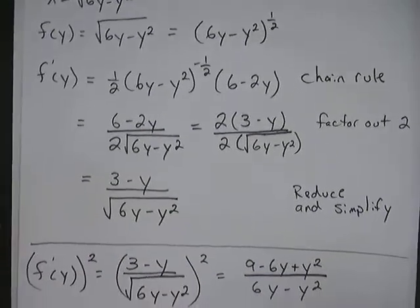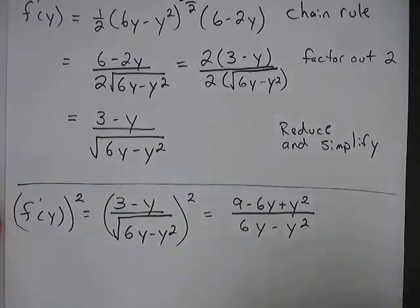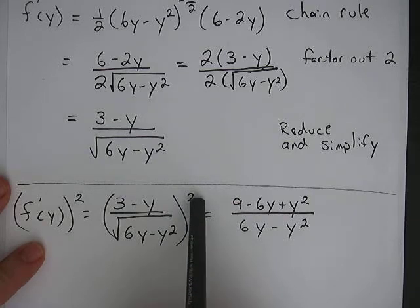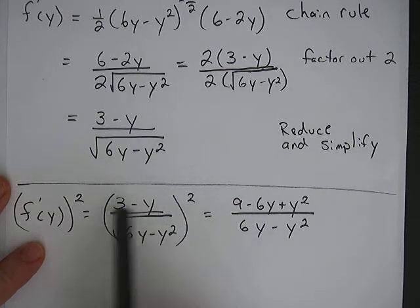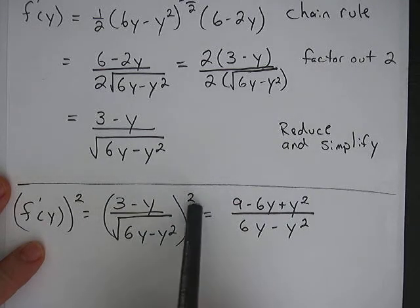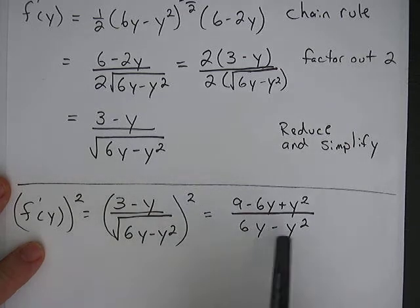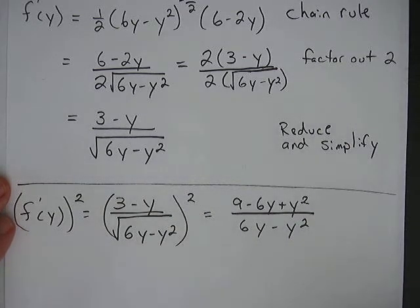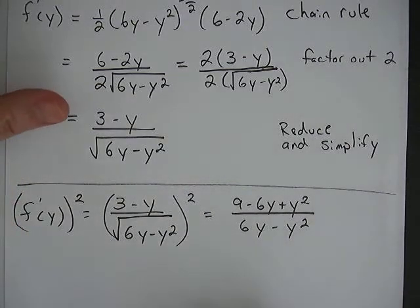And then to save some time as well, I went ahead and squared this ahead of time. So squaring means the top gets multiplied out, and then the bottom, the square root and the square cancel, and this is what you get. Okay, so refer back to that as needed.